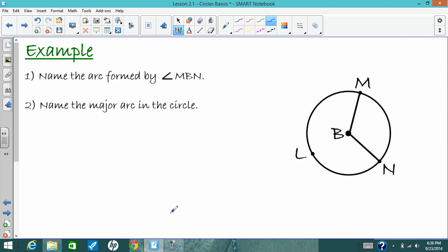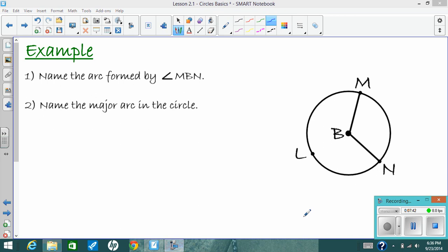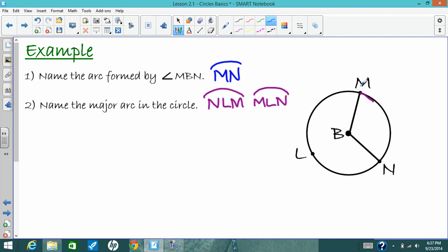So pause the video right now, and I want you to name the arc formed by angle MBN. And I also want you to name the major arc in the circle. So the arc formed by angle MBN here in blue is the minor arc. Arc MN. And the major arc is the one that's bigger than a semicircle. We could call it NLM or MLN, and that's the big arc here.